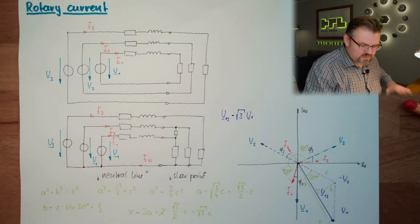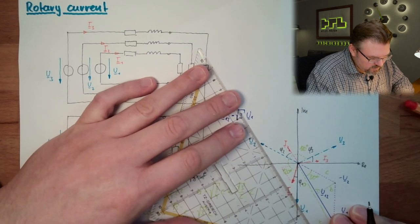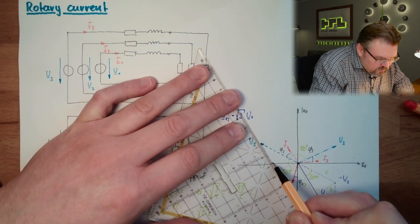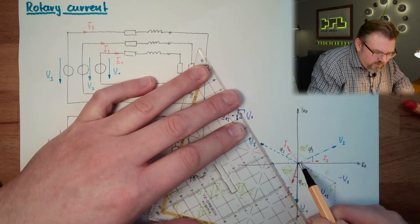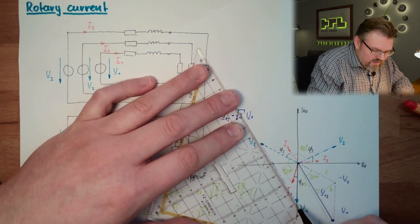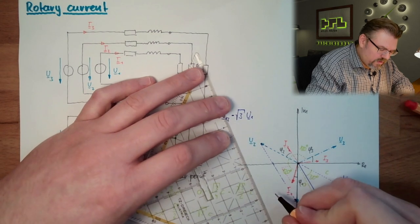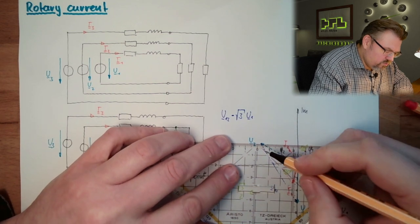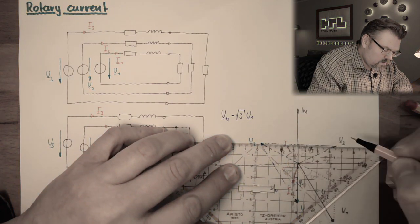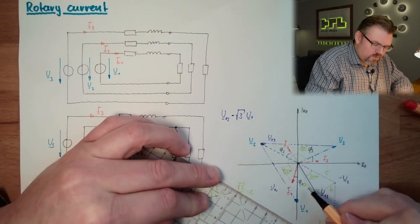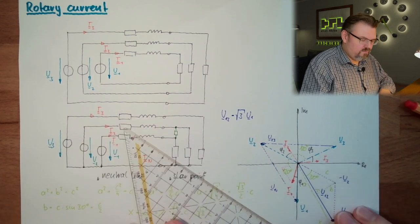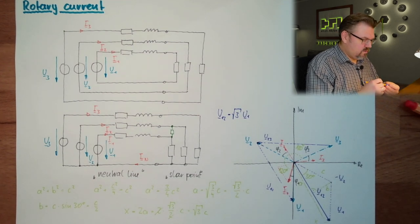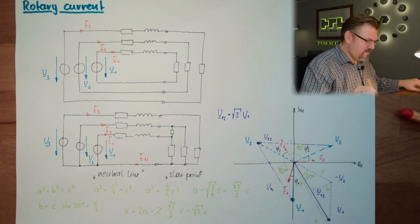So my U12 equals the square root of three U1. By the way, this U12 I can also find here, here in between those two. I just draw it dotted because actually the pointer is starting in the middle, but the length and the orientation of the pointer is here as well. Here U12, and here for instance I would have U23, U13, and here I would have U31. I will not draw it in because that would just mess up my nice sketch.